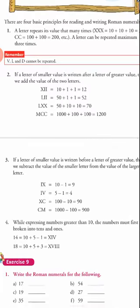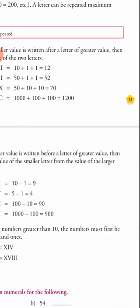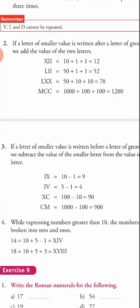The second principle: if a letter of smaller value is written after a letter of greater value, we add the values of the two letters. For example, X is 10 and I is 1. So XII means 10 plus 1 plus 1, which equals 12. To write 12, we write XII.